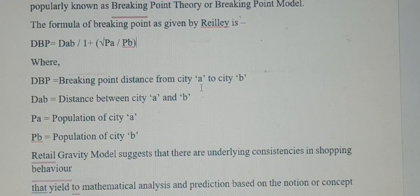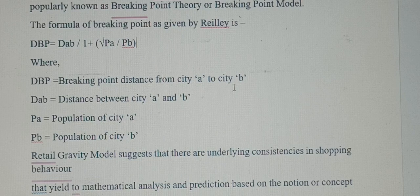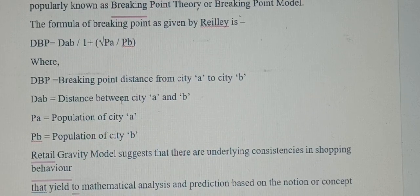Dab is the distance between city 'a' and 'b', Pa is the population of city 'a', whereas Pb is the population of city 'b'.